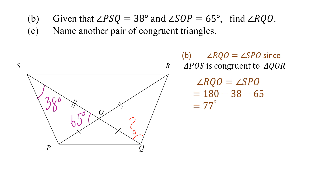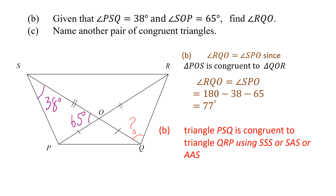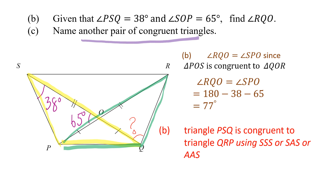For part C, we are asked to name another pair of congruent triangles. We can use triangle PSQ — it is congruent to the green colored triangle, which is triangle QRP. We already proved in part A that SOP is congruent to ROQ, so we can use SAS, SSS, or AAS to prove this pair, but we are only asked to name them. Triangle PSQ is congruent to triangle QRP.